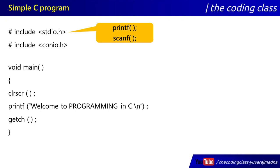So, if we use printf and scanf in our program, then those functions are called from the standard io header file. This is a console io file, which provides the clear screen and getch functions. So you can execute the header files.